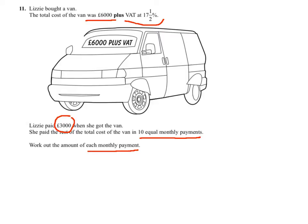First of all, the total cost of the van is the £6,000 plus VAT. The VAT is 17.5% of £6,000, so I need to work out 17.5% of £6,000 in order to know the total cost.